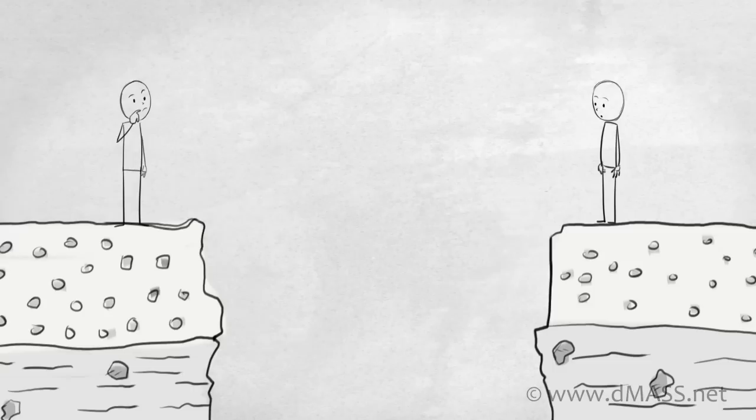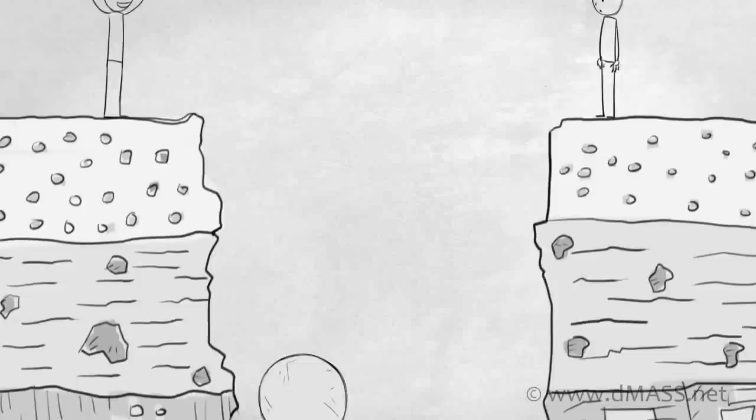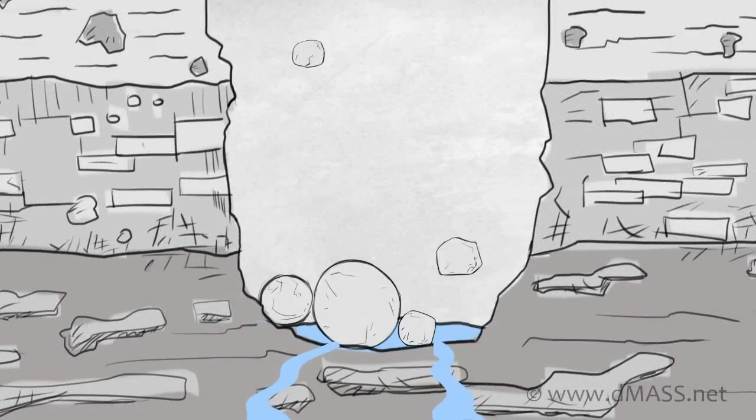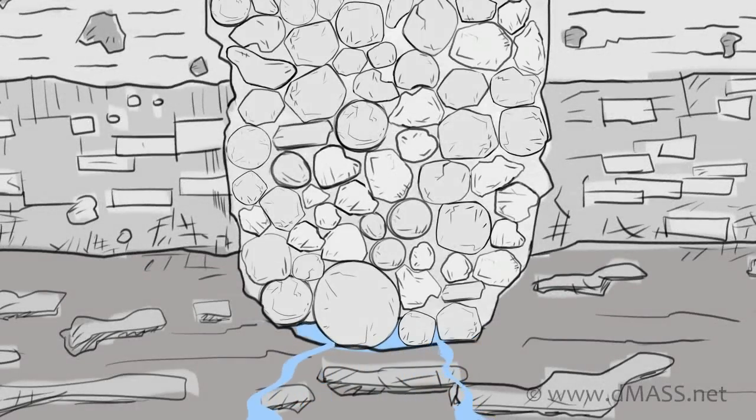So they tried to figure out what they could do, and some of them started to dig up rocks and throw them into the canyon. Eventually, the canyon completely filled up with rocks, and it became the first bridge.